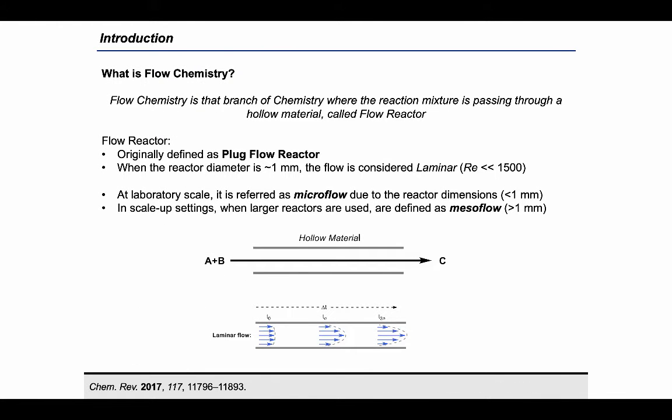Flow chemistry is defined as the branch of chemistry where the reaction mixture is passing through a hollow material called a flow reactor. In an engineering context, a flow reactor can also be named as plug flow reactor, while in the context of applied chemistry, plug flow reactors are referred to as microflow.